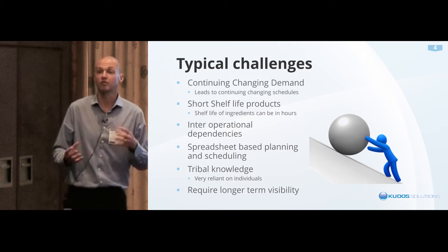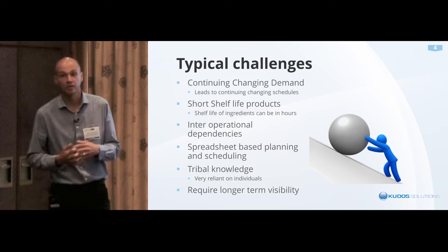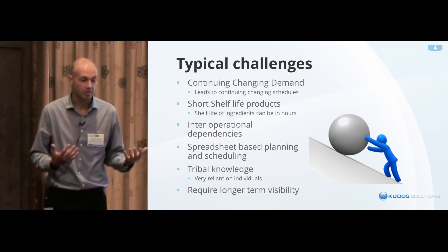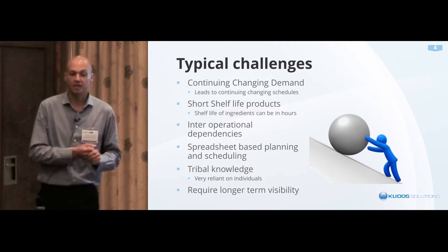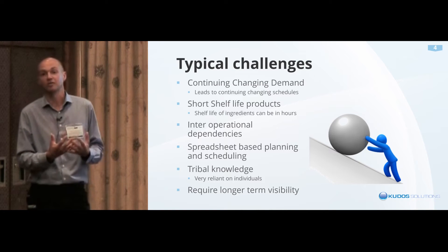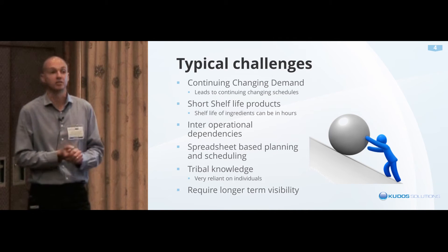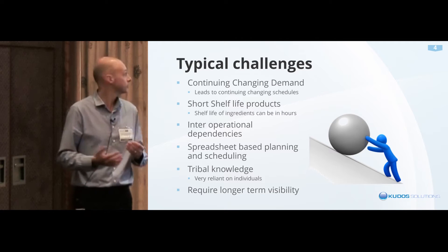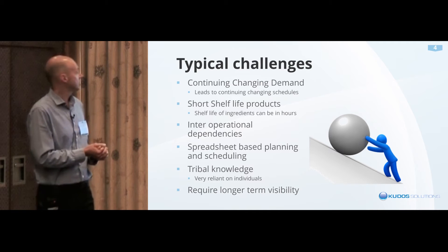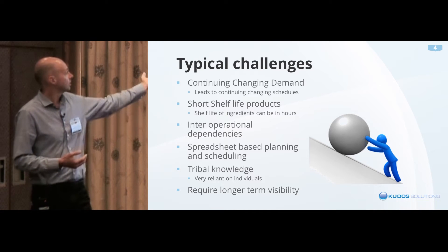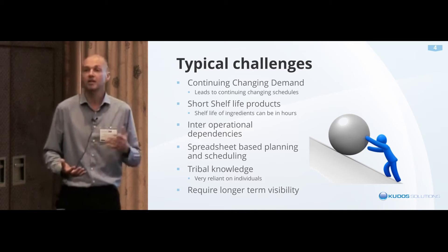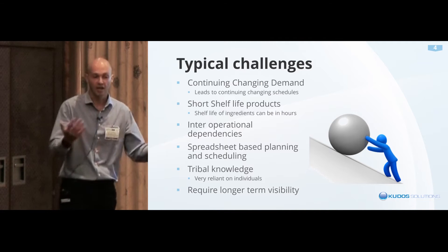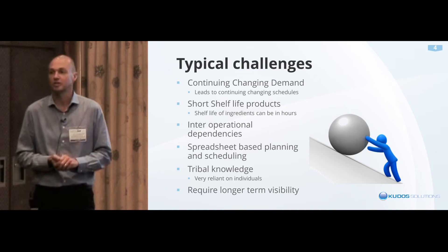You typically also have a short shelf life on the intermediate processes as well - that could be in hours. You've got maybe a few days of finished product life before you have to give it over to the customer, but within the ingredients you're putting in, it can be within hours. We also have inter-operational dependencies based on shelf life - we can't cook something and pack it five hours later; there has to be a link between those two processes.